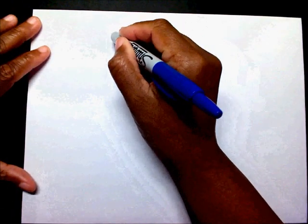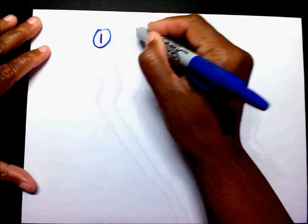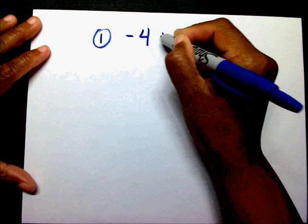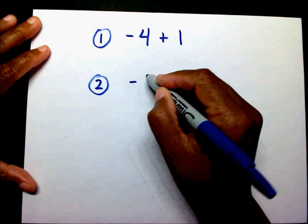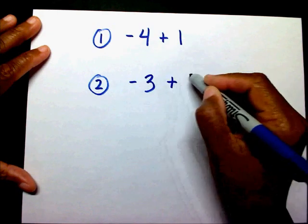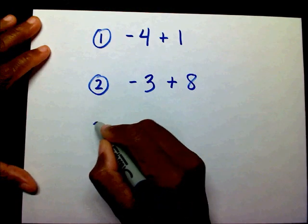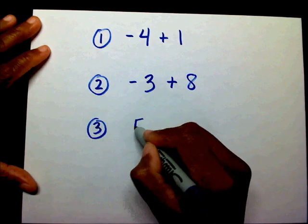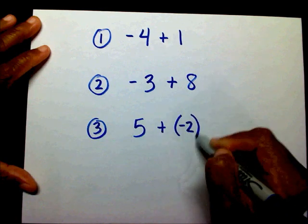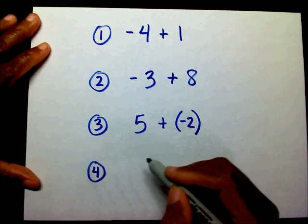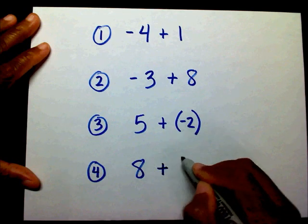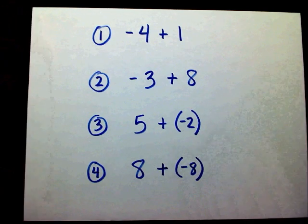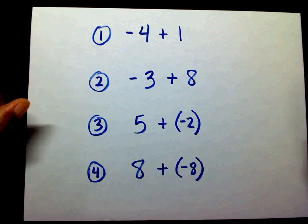I would like for you to work some now — try some on your own. Number one: negative four plus one. Number two: negative three plus eight. Number three: five plus negative two. And number four: eight plus negative eight. You can pause the video right now while you work.